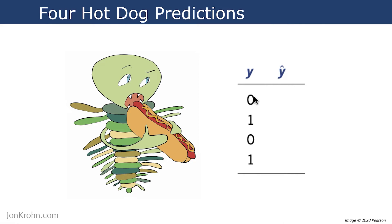So in these four images, this column Y shows the real state of the world, the true state of the world. So there are two images with a hot dog labeled as one, and two images without a hot dog labeled as zero.